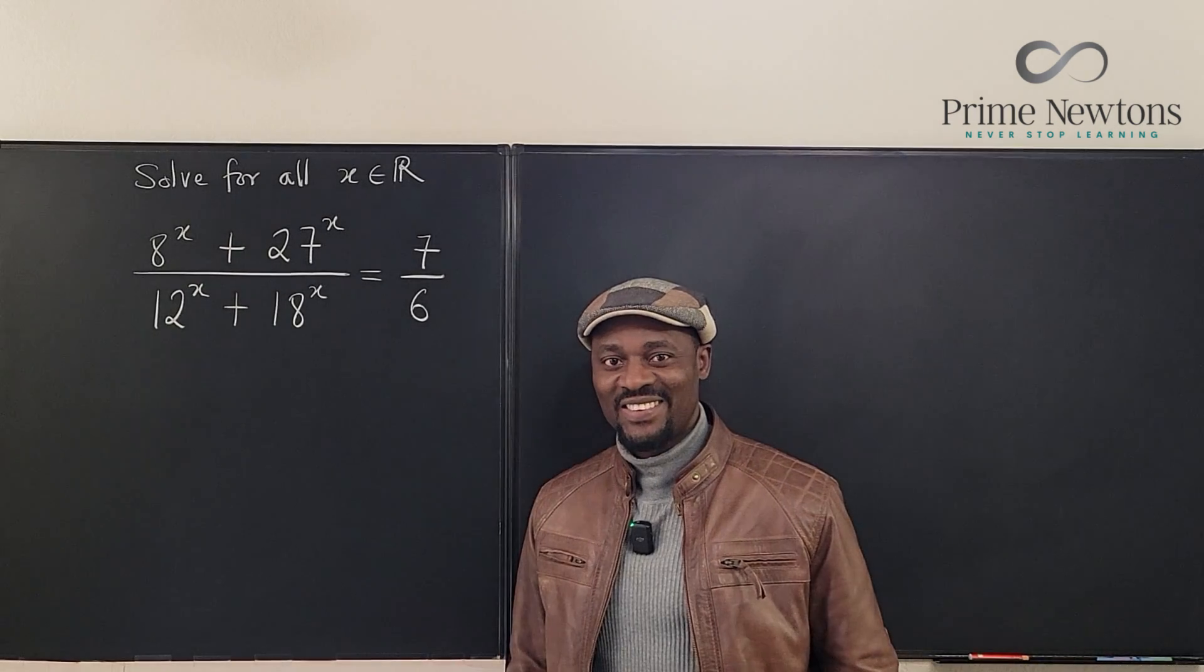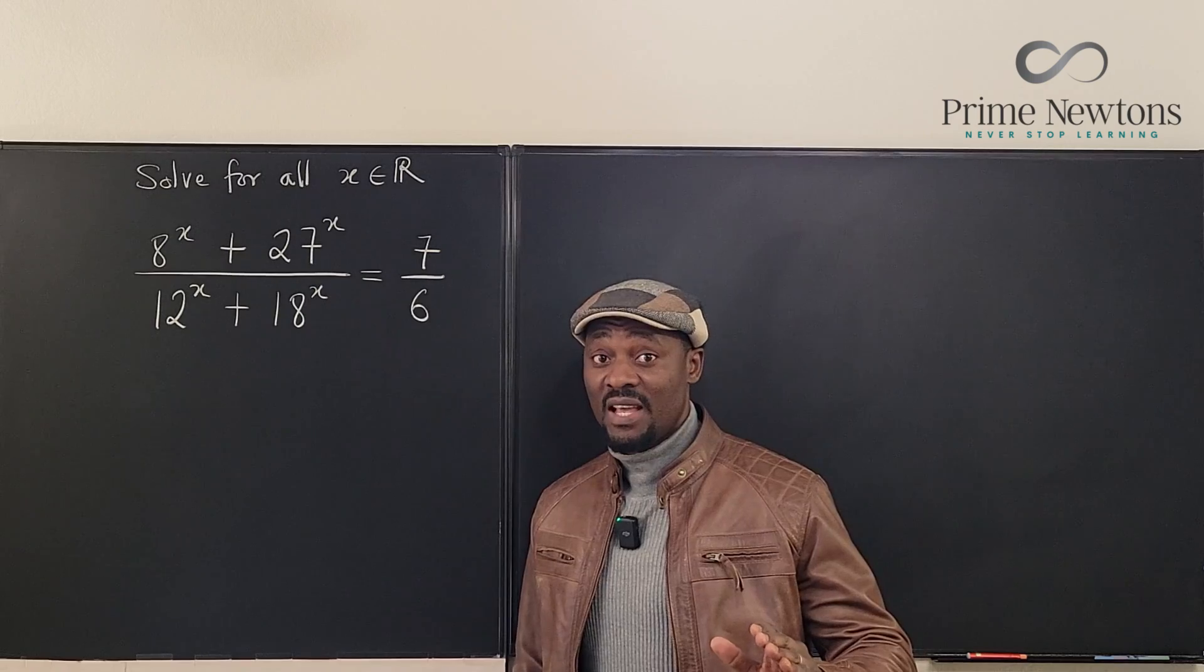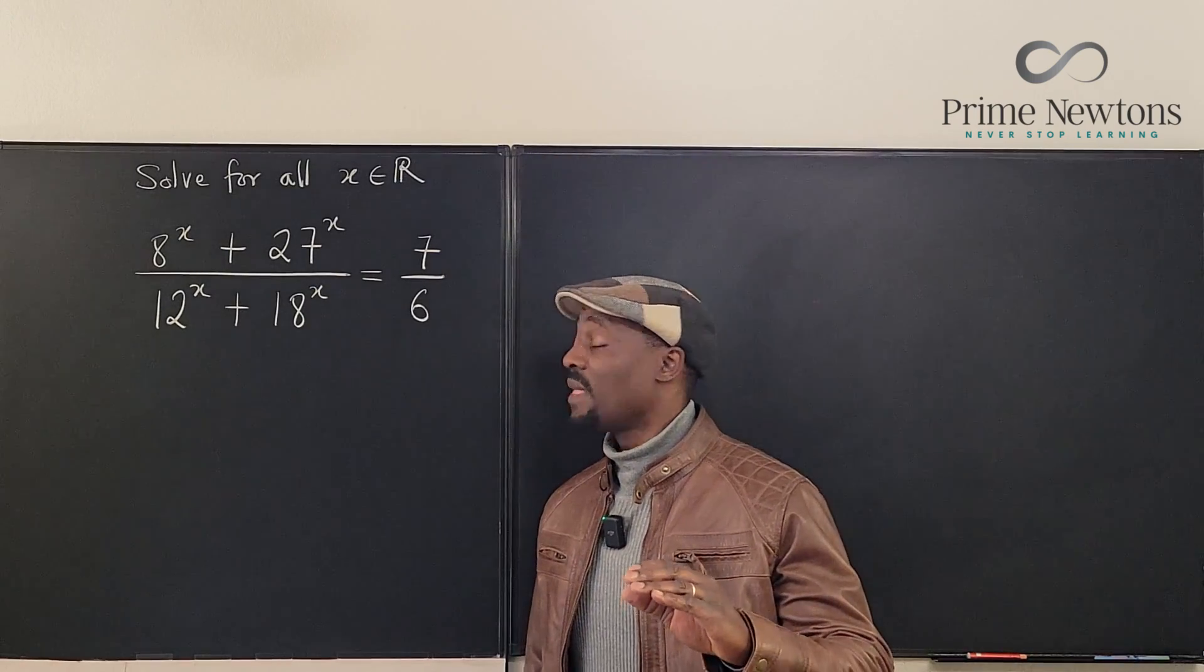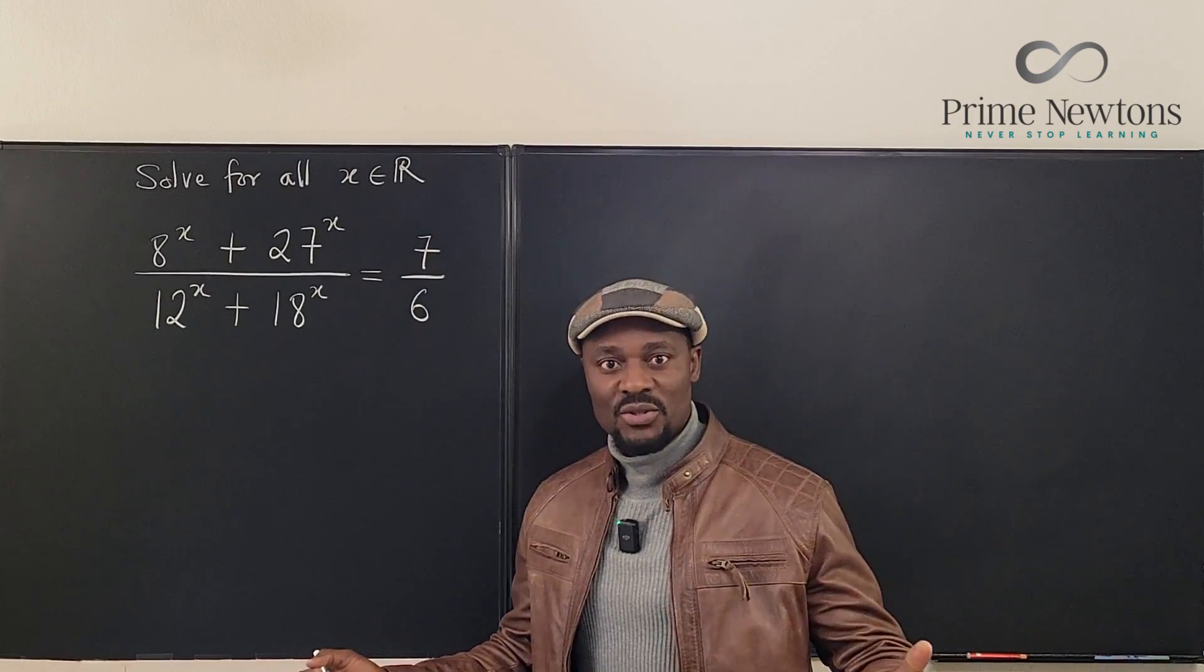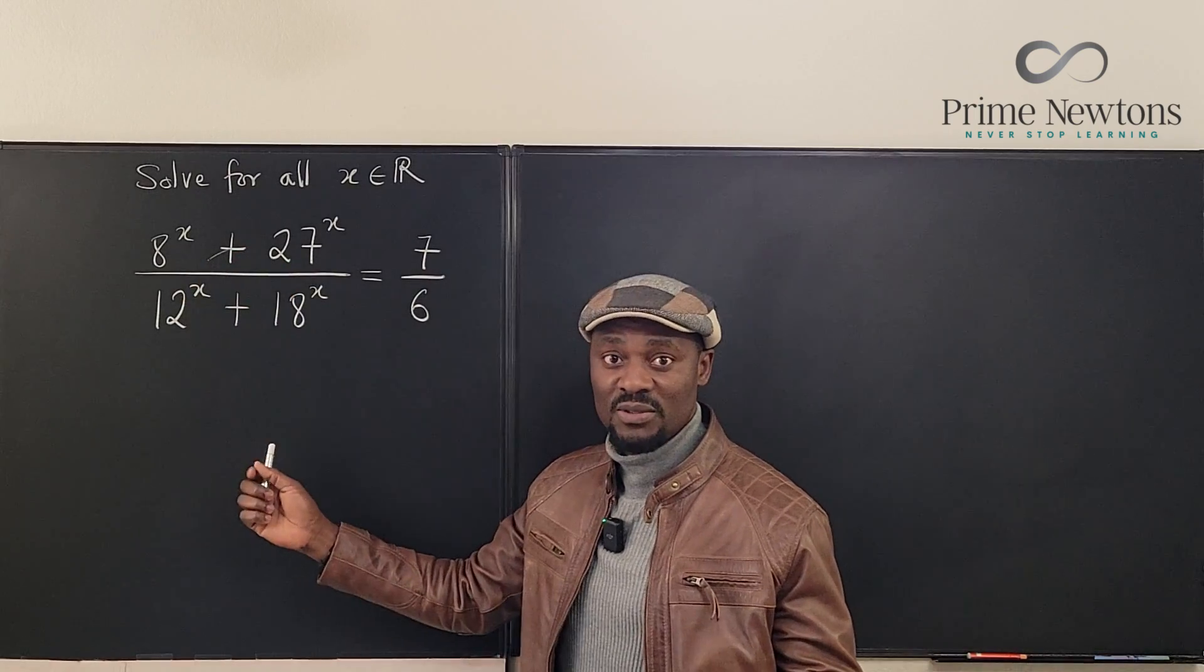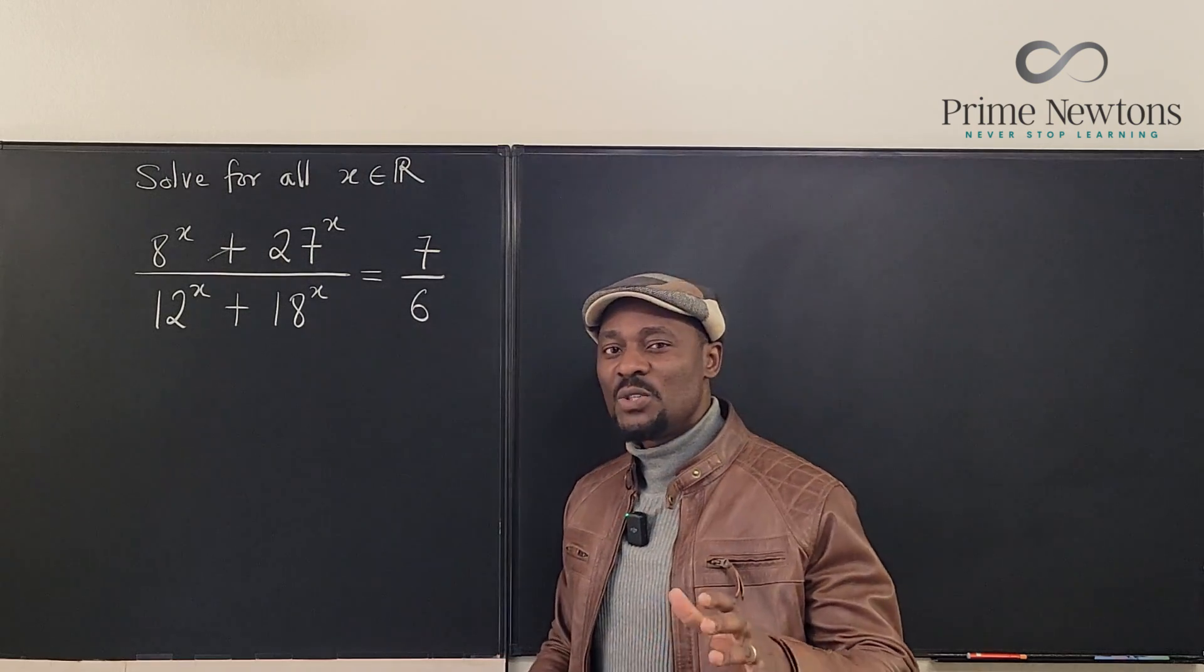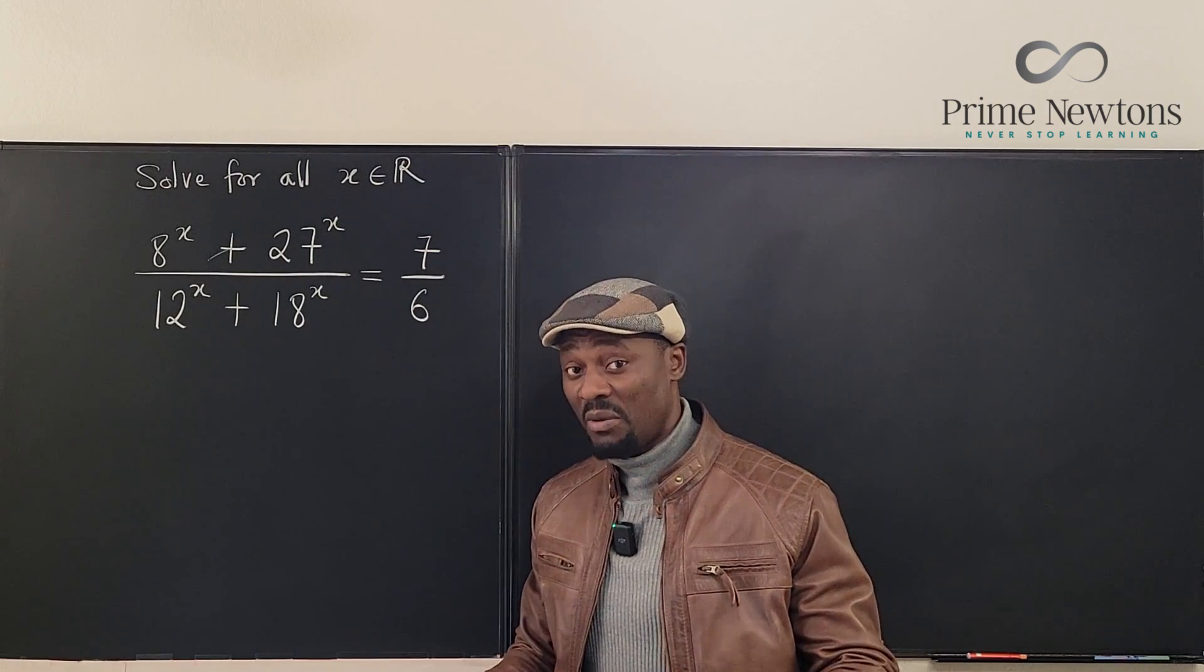Welcome to another video. Here we have something I would call an exponential equation, but it's still a fraction form equation or rational form equation. We can't call it a rational equation because these are not polynomials, the exponential expressions. So what can you see just by looking at it? Because that's the key to solving this problem.